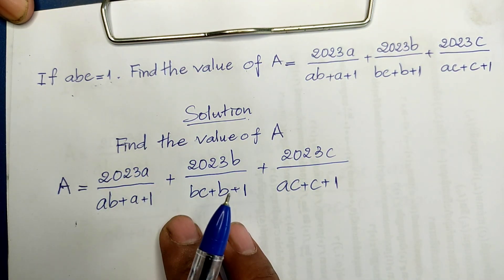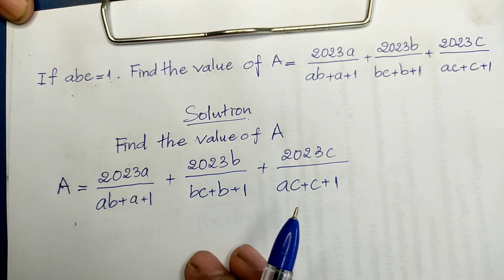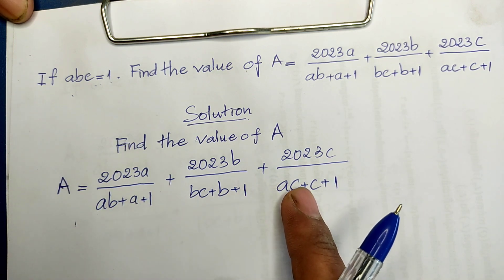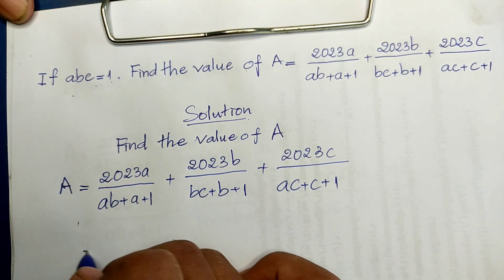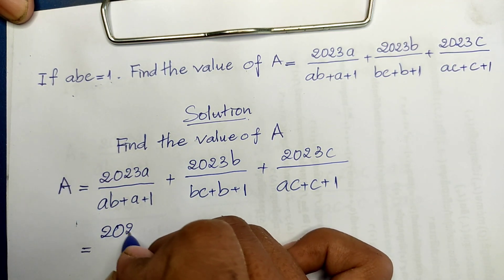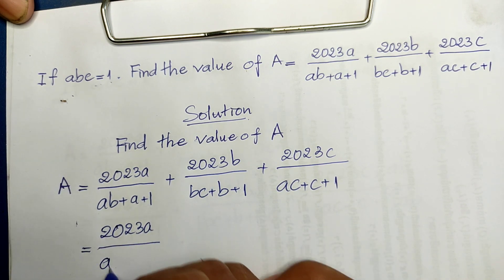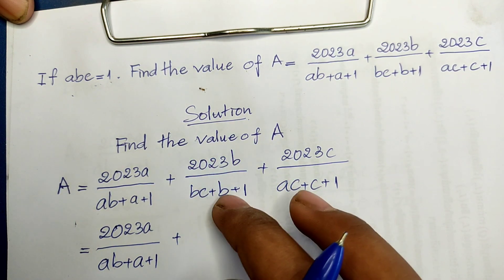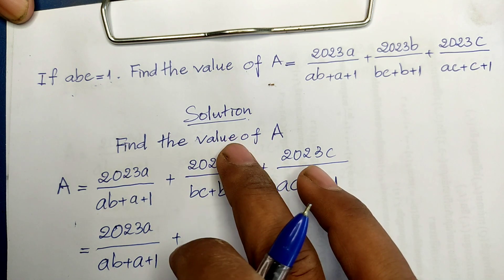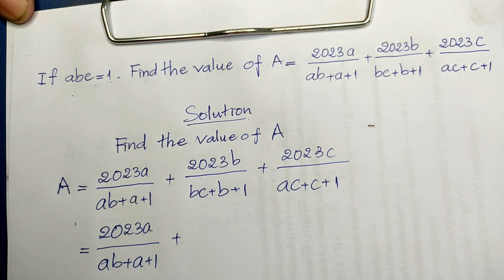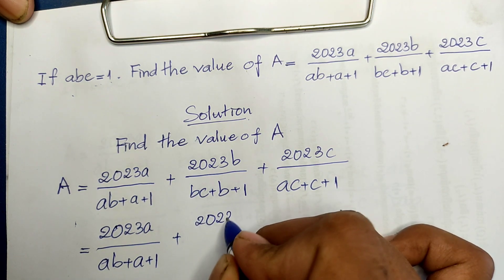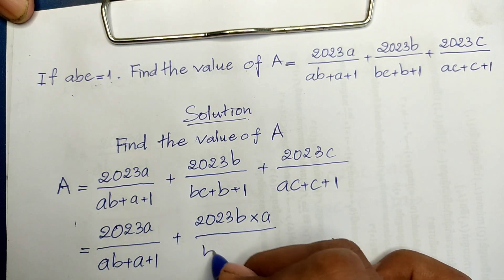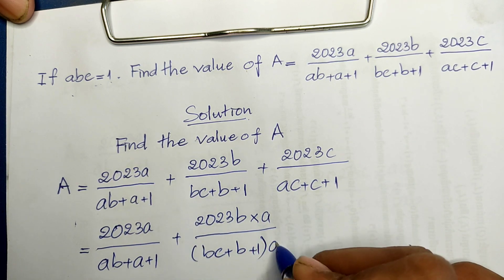The values in the expression involve abc, bc, and ac. For the first term, I multiply the numerator and denominator by a, so I get 2023a·a divided by (abc + a + 1) — and since abc = 1, those terms simplify accordingly.